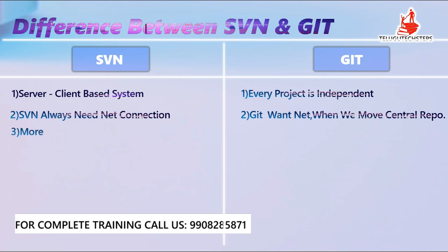Coming to the third point: in SVN, extra memory/disk space is used. For example, for a given application, every developer's system needs to be connected to the centralized system and hold the code, so disk space becomes a concern both on the developers' systems and on the server.